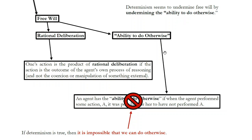But recall there's a second option in the argument: indeterminism. Could that possibly give us free will? Maybe. But to see that, we'll have to wait until the next video. I hope this video was useful, helpful, and maybe a little entertaining. I will see you next time.